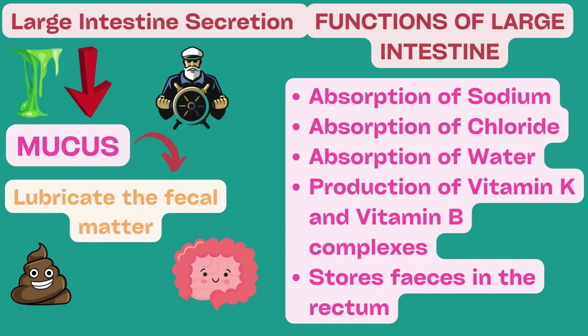Now that we have understood the functional anatomy of the large intestine, we will look at the important physiological aspects that contribute to stool formation. Mucus is the chief secretion of the glands in the large intestine. Its main function is to lubricate the fecal matter. Mucus is also alkaline in nature due to the presence of bicarbonate ions. This alkaline nature helps to neutralize the acids formed by bacterial action in the colon. The secretory activity of the large intestine is increased by tactile stimulation of the mucosa, produced by direct action on the surface epithelium and through local neural mechanisms, which increase secretion of the glands.